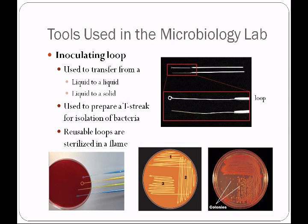Reusable loops are going to be sterilized in a flame. They're made out of a special metal called nichrome, which is an alloy of nickel and chromium that will come to red hot very quickly and will kill microorganisms, turning them to ashes and gas. We also have disposable loops that we'll be using in later labs.